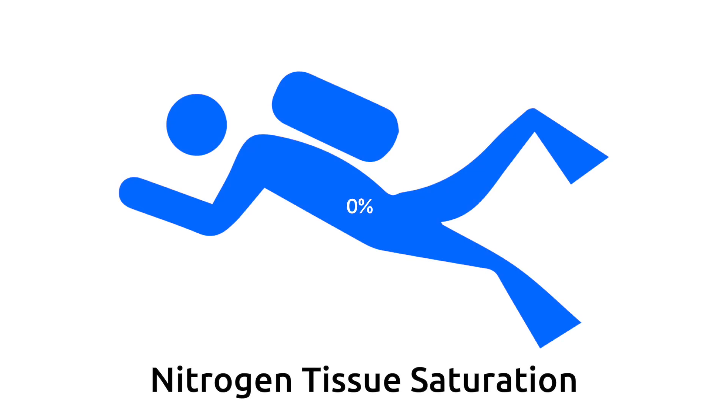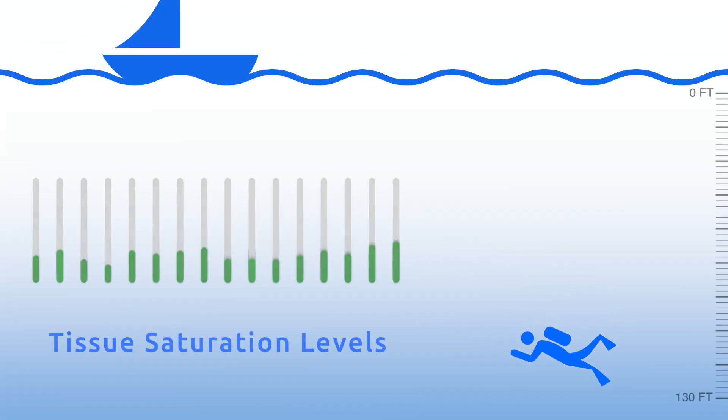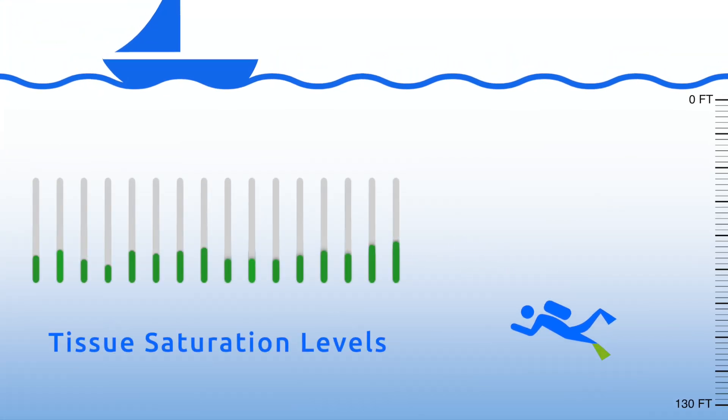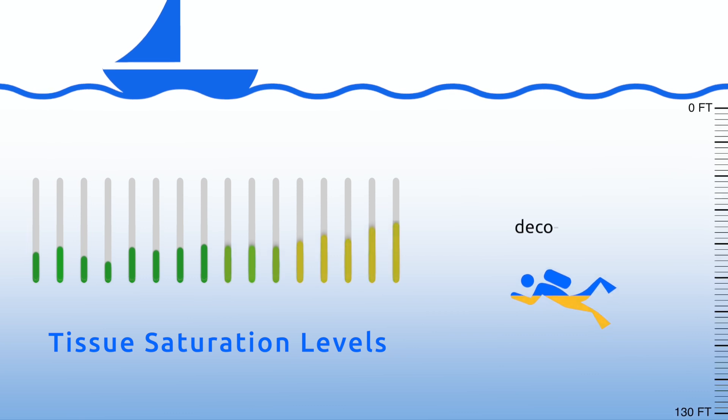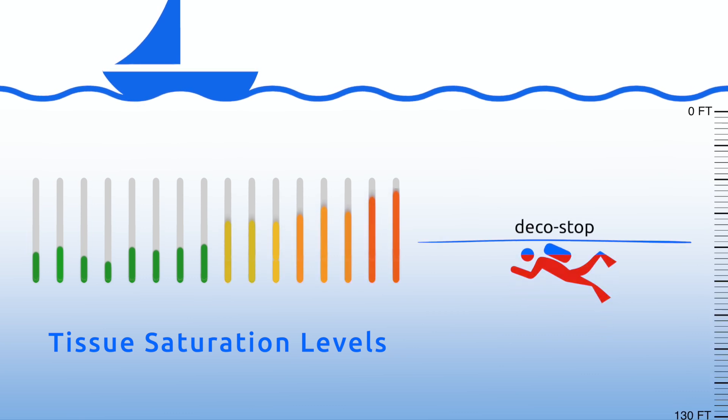This algorithm calculates if and when you need to perform a decompression stop during your dive. The way that Buhlmann decompression works is that you ascend until the tissues hit their supersaturation limit. At this point, you should not ascend any further because the tissues will become more supersaturated than Buhlmann theory believes you should allow. So, if you stop at that depth, this will be your first decompression stop.